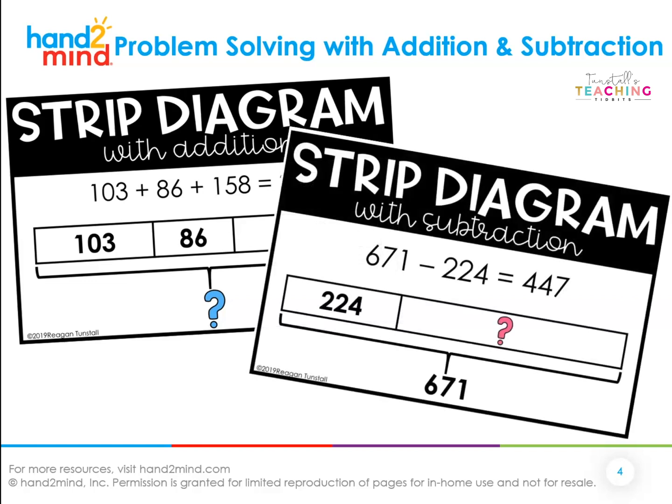You can also use a strip diagram with subtraction. As you notice here, the total is at the bottom with the bracket, and there are two parts, but one of the parts is missing — that's the subtraction part. You start with the whole, take away one part to find the other part.